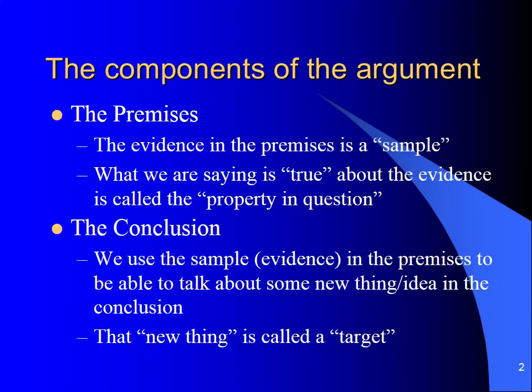Like all arguments, inductive arguments have premises and a conclusion. The premises contain our evidence. In an inductive argument, that evidence is called a sample. And we're usually saying something is true of our evidence. Whatever we're saying is true about our sample is called the property in question, or sometimes it's called the feature in question.